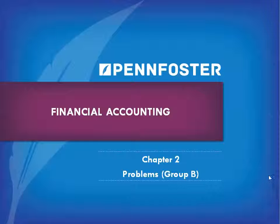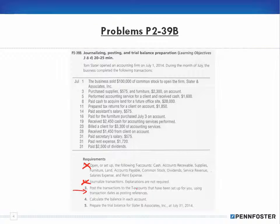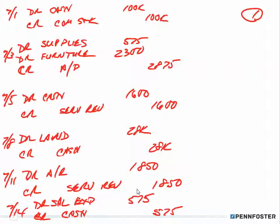Welcome back, students taking financial accounting. This is part of the series of videos for chapter two, problems group B. In the last video we were working on problem 39, so I'm just going to pick up right where I left off — watch that video first. We had opened up our ledger accounts, our T-accounts, and created journal transactions. Now it says to post the transactions to the T-accounts using transaction dates as posting references. I mentioned I'm not going to be putting the dates in due to space requirements.